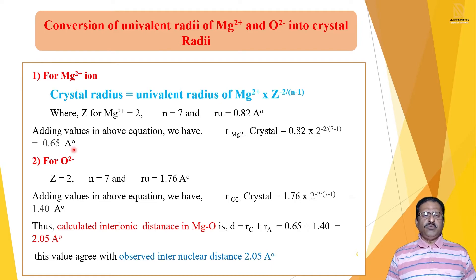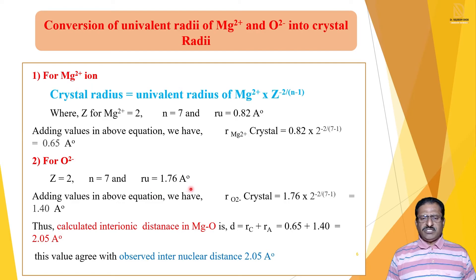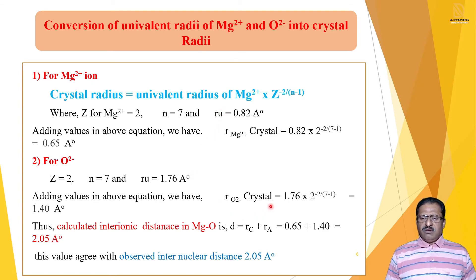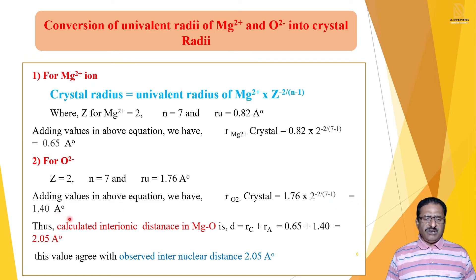Now we calculate for O²⁻. For the O²⁻ ion, Z is 2, N is 7, and R_U is 1.76 Å. Substituting into the formula: R crystal(O²⁻) = 1.76 × 2^(−2/(7−1)) = 1.40 Å. So by calculation, the crystal radius of O²⁻ is 1.40 Å.